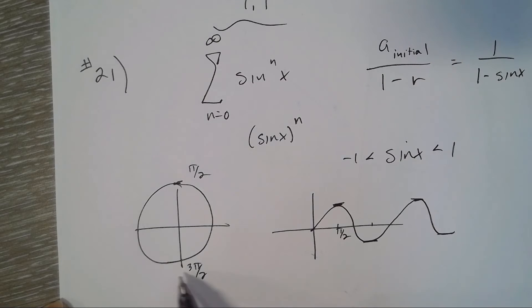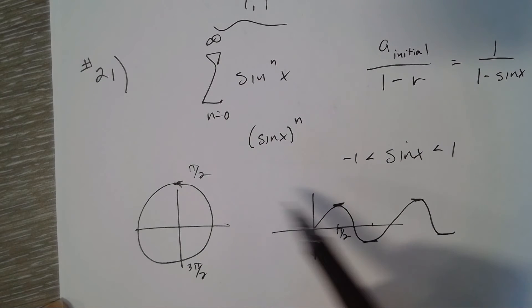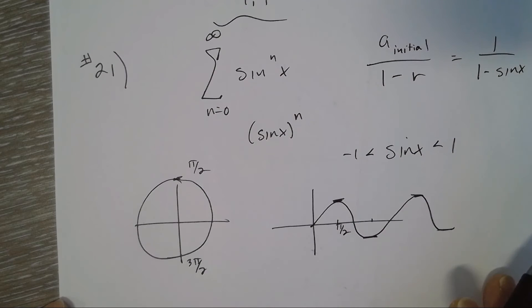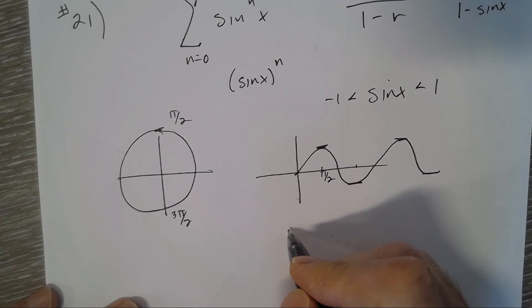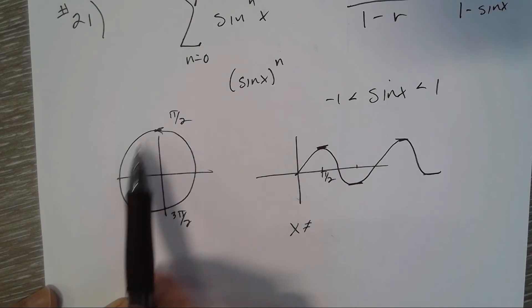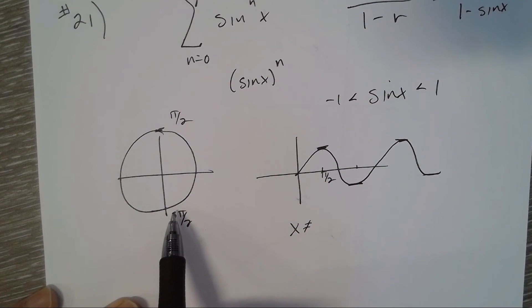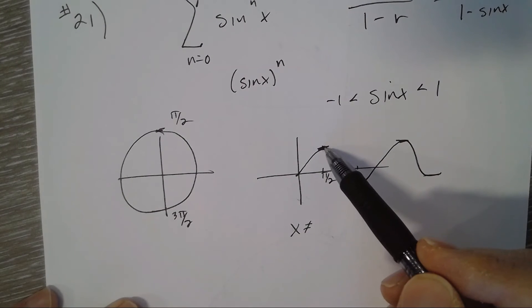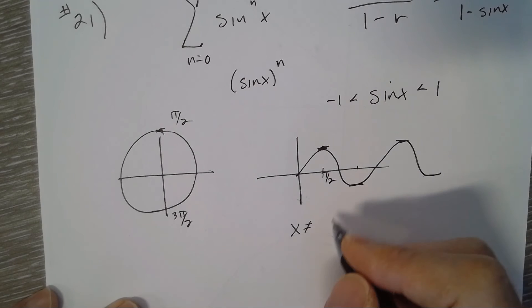And so on, so it looks like it happens every π where it's not going to converge. So what values work? I'd say all reals except for, the way I like to do it is if I know that I'm going up π every time, I find the first one where we're looking for at π over 2.